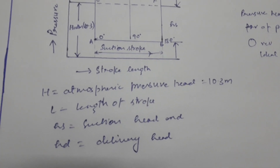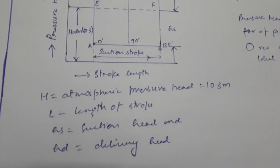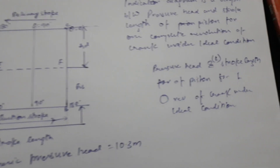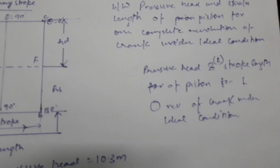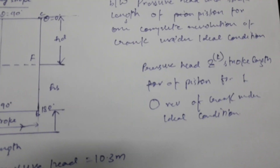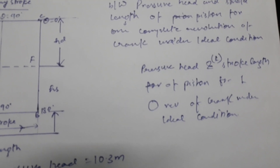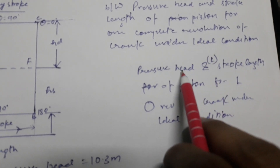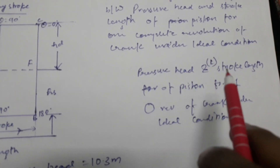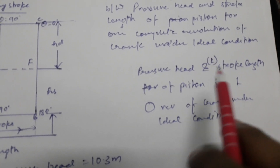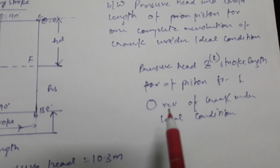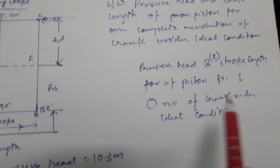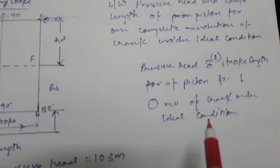To recap, an indicator diagram is a graph between pressure head and stroke length of the piston for one complete revolution of the crank under ideal conditions.